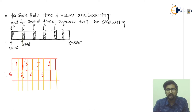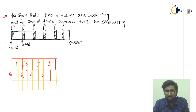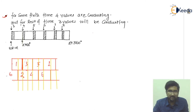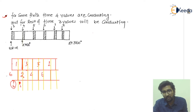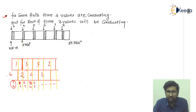Looking at the diagram: the upper portion shows thyristors 1, 3, and 5 (upper commutated group), and the lower portion shows thyristors 2, 4, and 6 (lower commutated group). In the ideal case, at any time one from each group conducts: first interval 1 and 6, second interval 1 and 2, third interval 2 and 3, fourth interval 3 and 4, then 4 and 5, and so on.